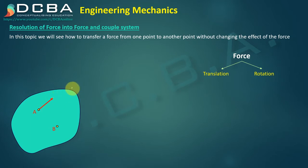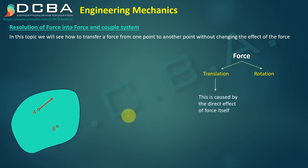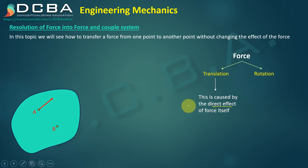When we transfer this force from point A to point B, we do not want to lose the effect of the force — we still need to have the translation and still need to have the rotation. This translation is caused by the direct effect of the force itself: if the force is acting in a certain direction, it is going to carry that particular object in that direction.